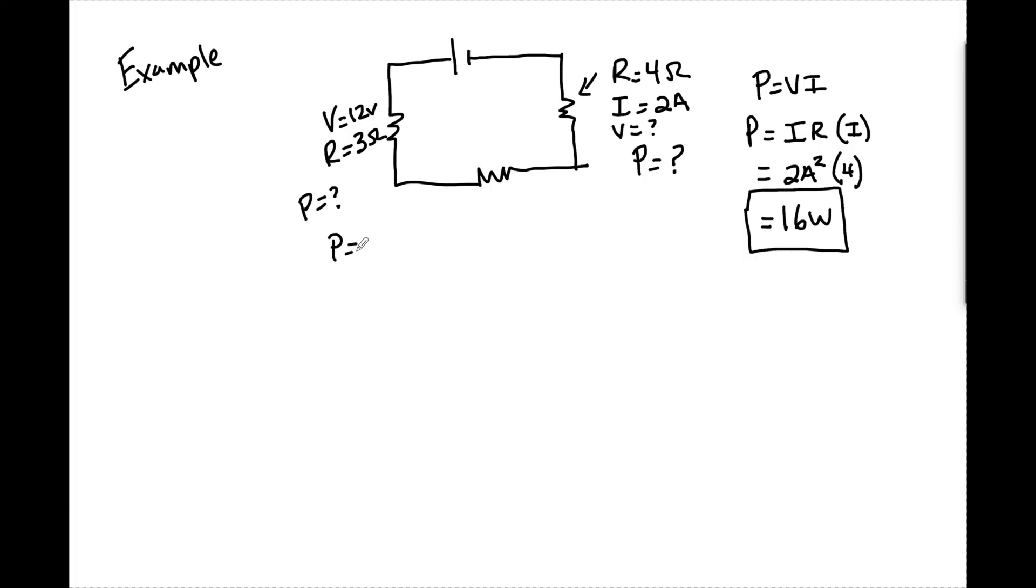So we know that P equals V times I. But in this case I don't have I. So now we have V times V over R which is a substitution for I. So we have 12 times 12 over 3 which is going to be equal to 48 watts.